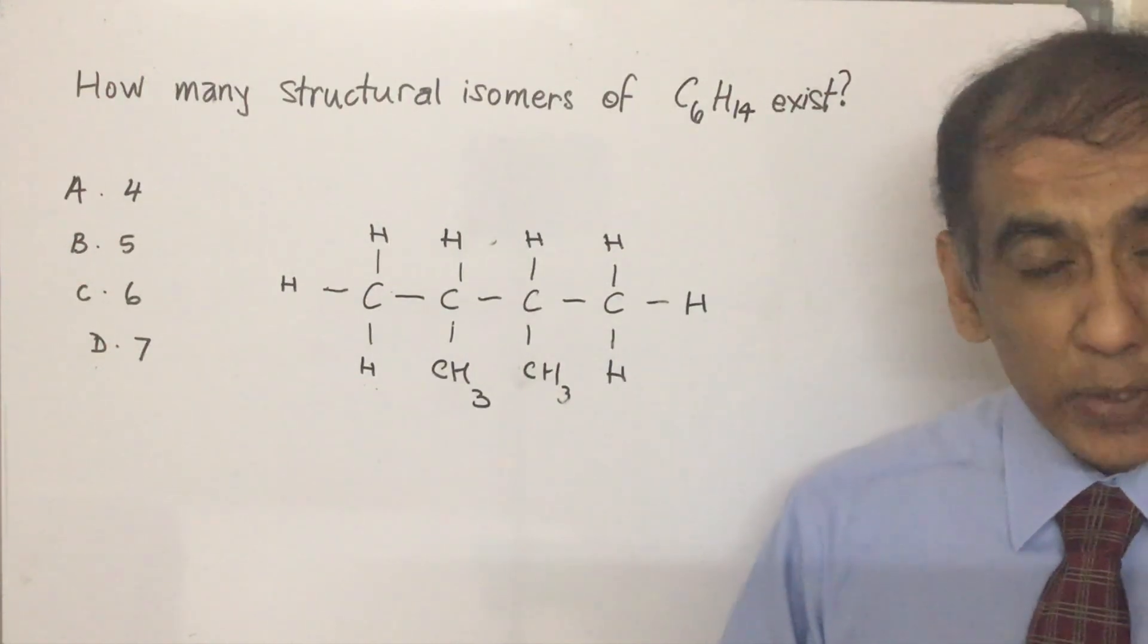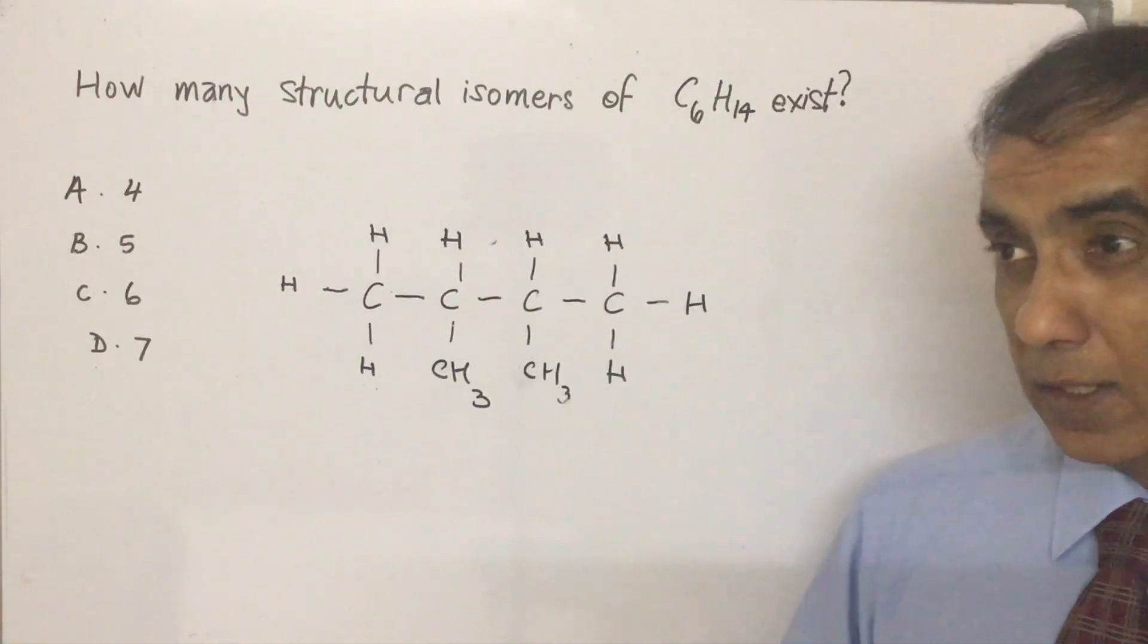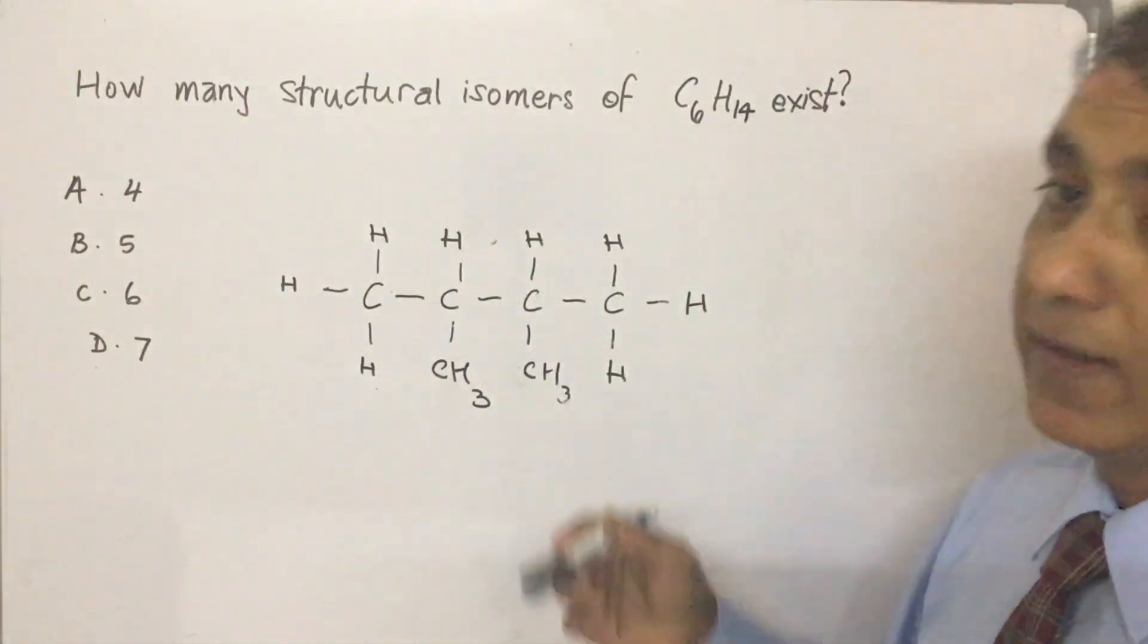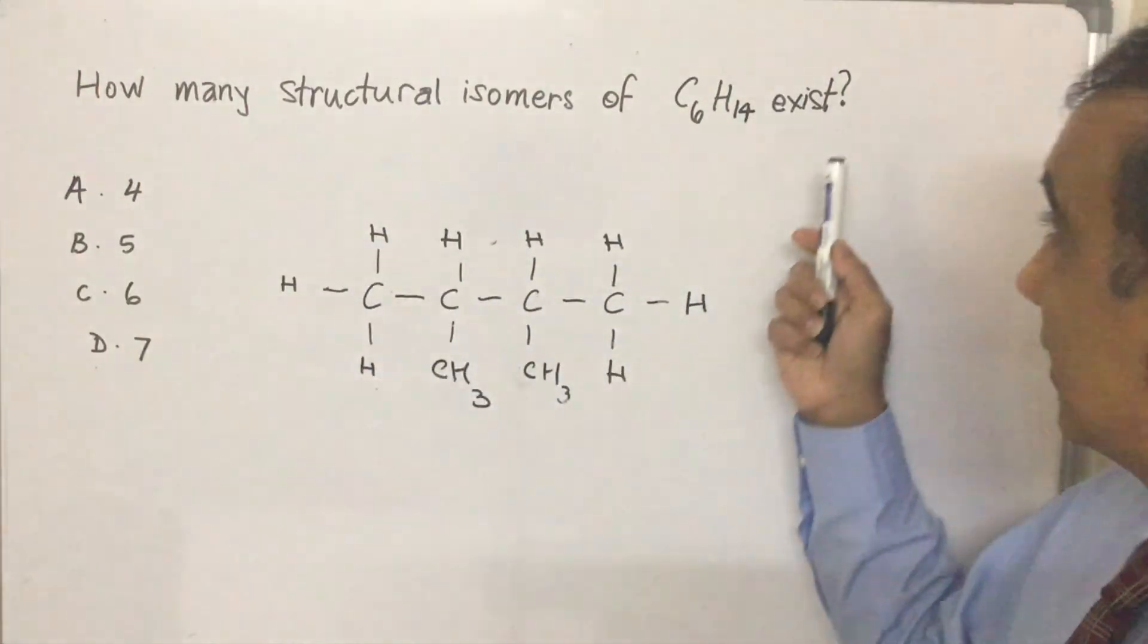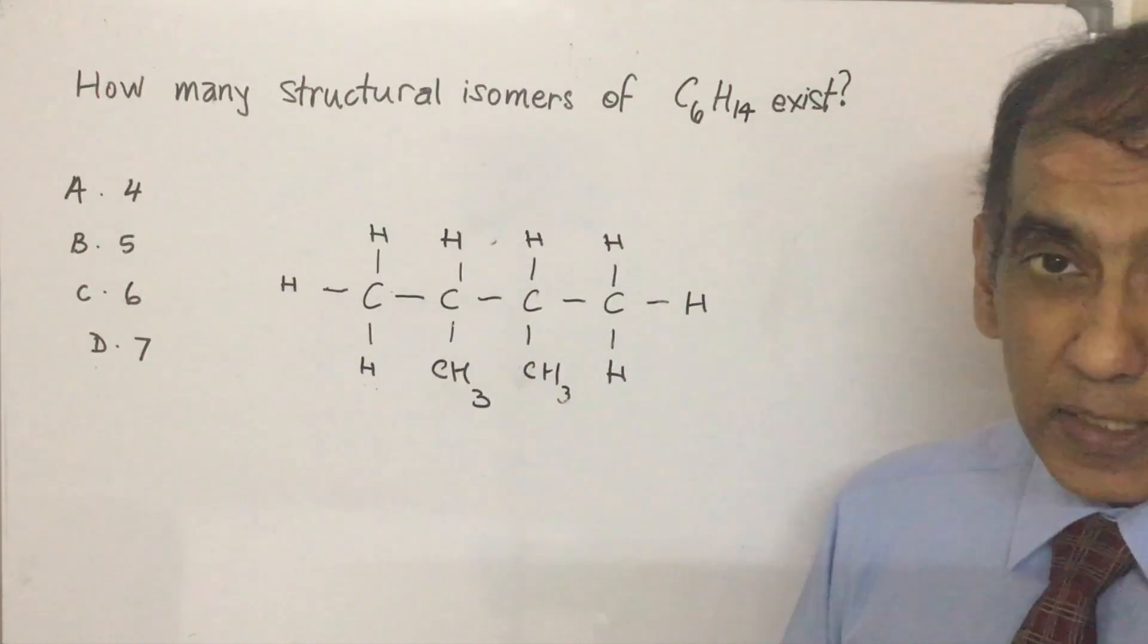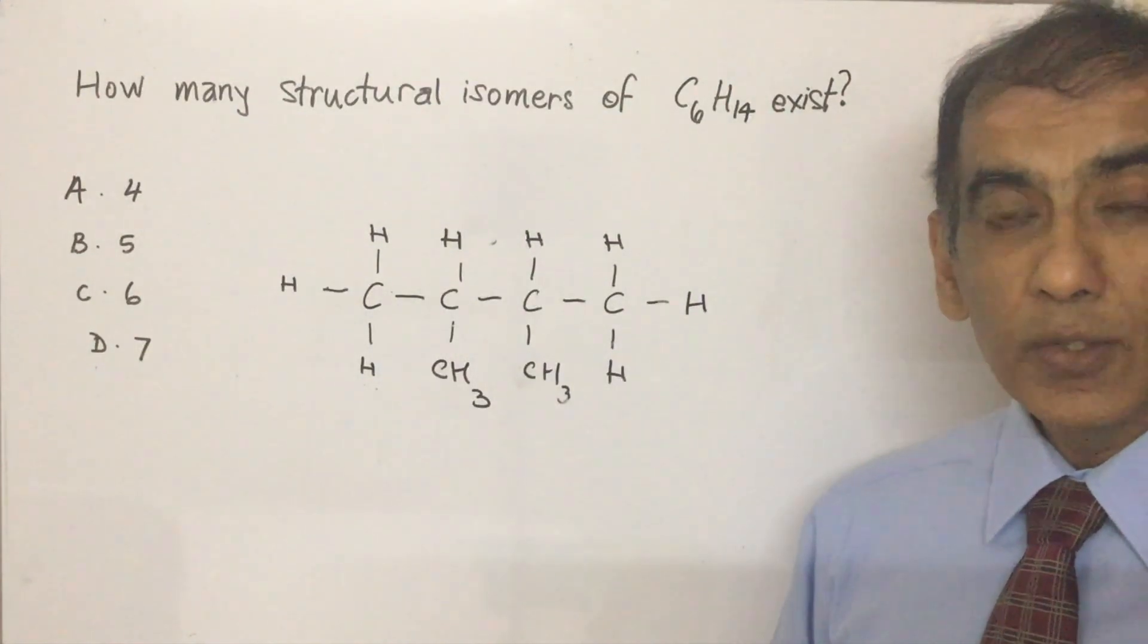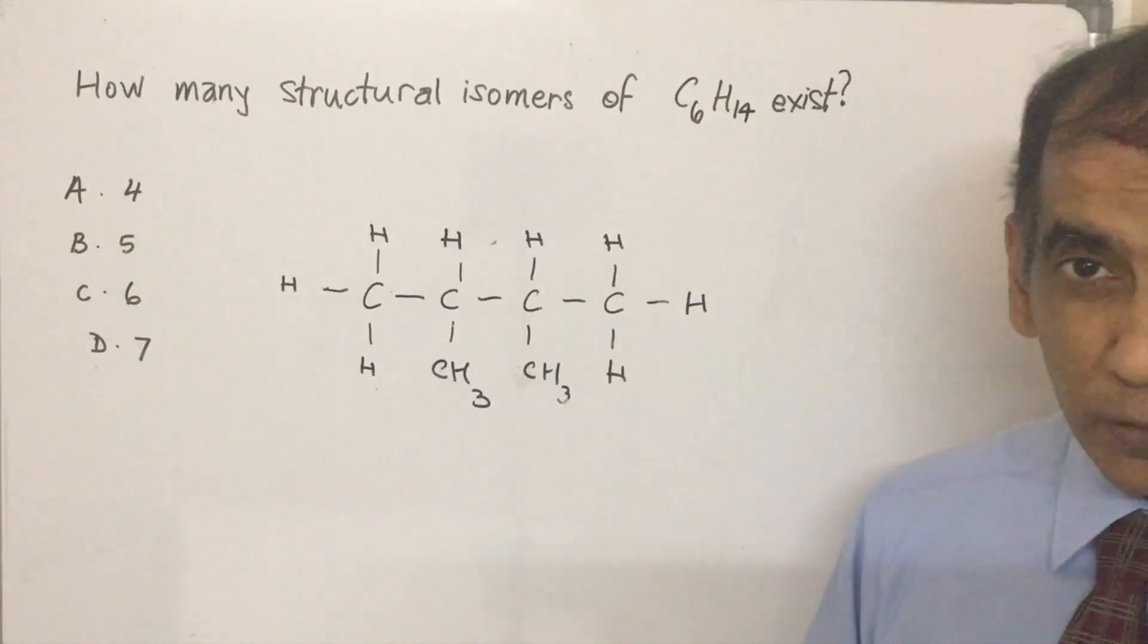Now, doing that under the pressure of the exam could be a bit of a challenge for most students. What you could do, of course, is to memorize and to know that C6H14 is going to have five structural isomers. And if you get C5H12, know that that's going to have three structural isomers. And if you get C4H10, know that that's going to have two structural isomers. But how do you remember all of this? Is there a formula?